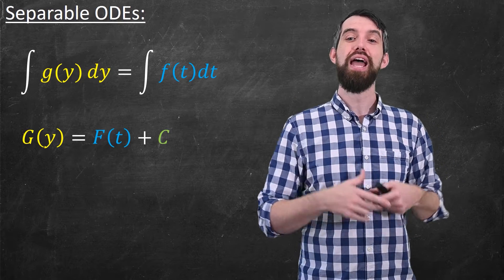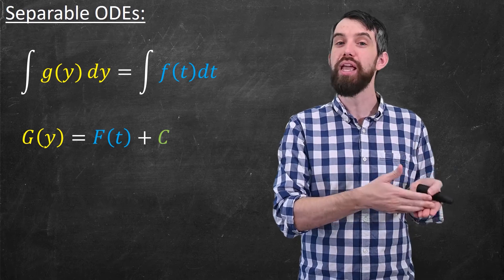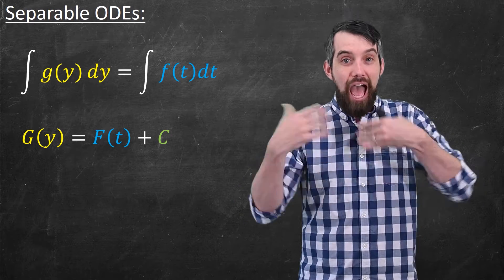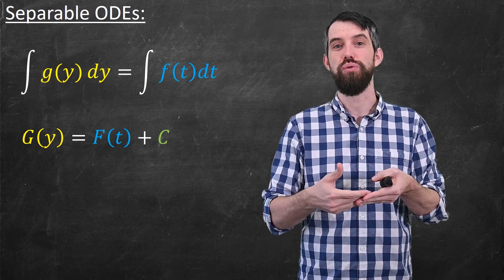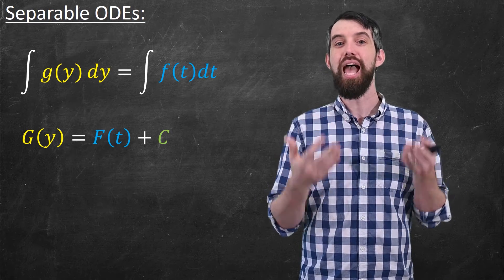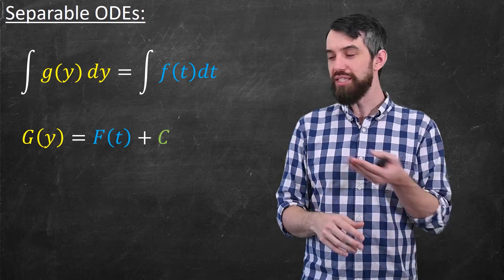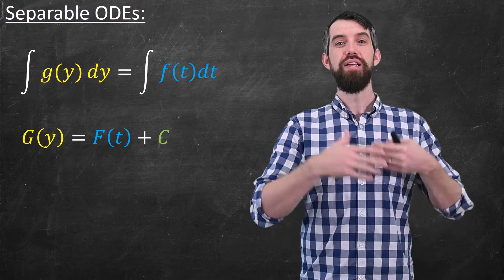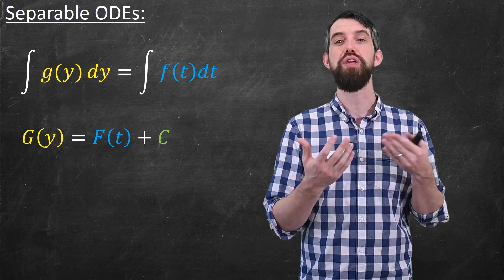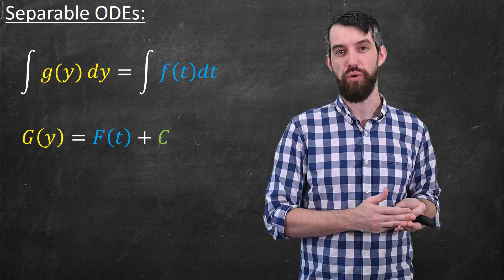If I then define that capital G of y is an antiderivative to lowercase g of y, I define that capital F of t is an antiderivative to lowercase f of t, then I get the equation capital G of y is capital F of t plus that arbitrary constant c.